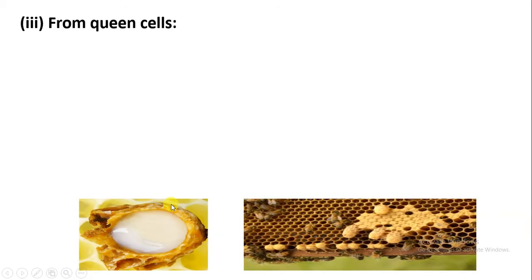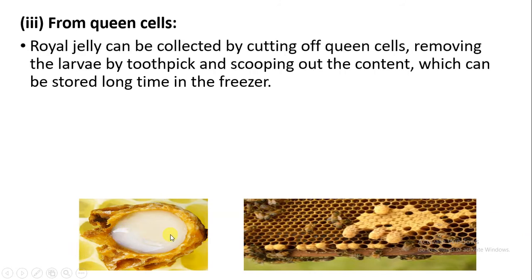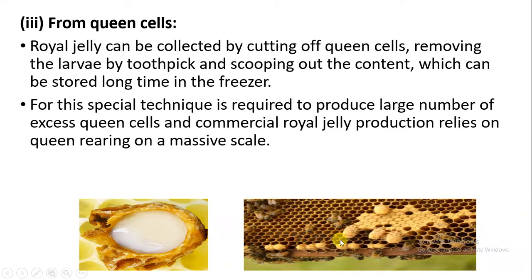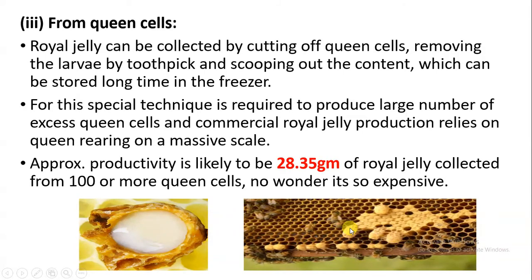In a year, 500 grams of royal jelly can be extracted from every hive. The next method is from queen cells — royal jelly is collected by cutting of the queen cells. The queen larvae are removed using toothpicks and then the royal jelly is collected and stored in amber colored bottles in the freezer for a long time. In this technique, we produce a large number of queen cells commercially, and the productivity is approximately 28.35 grams of royal jelly extracted from 100 or more queens.